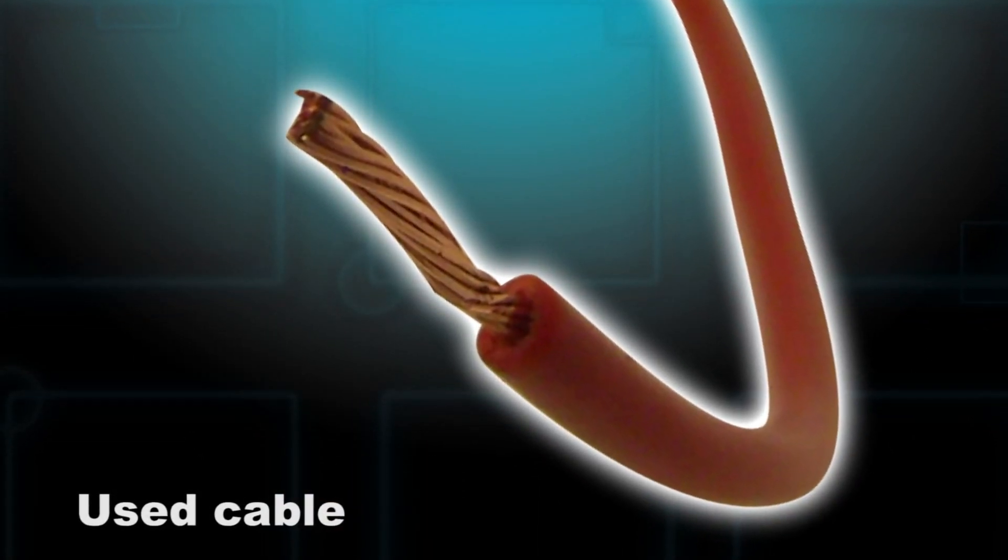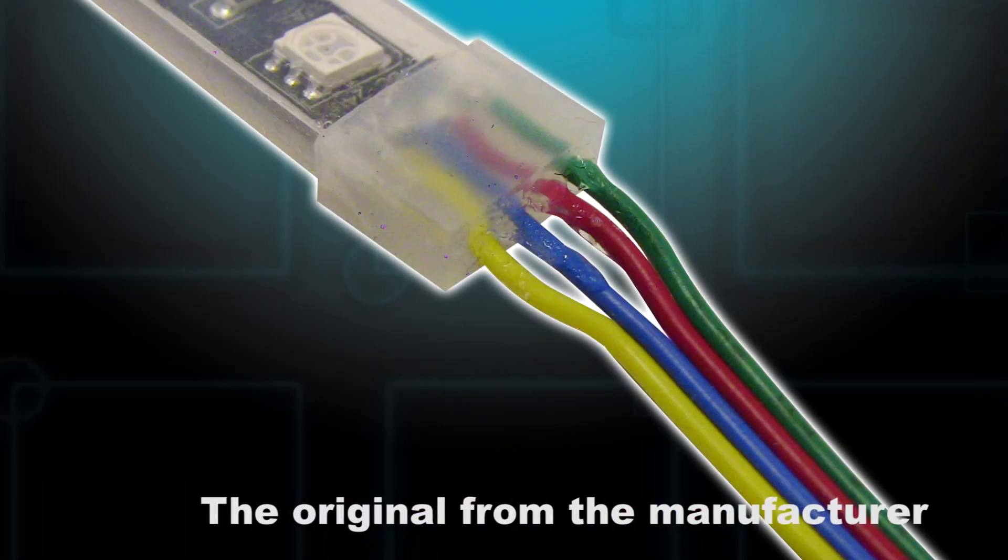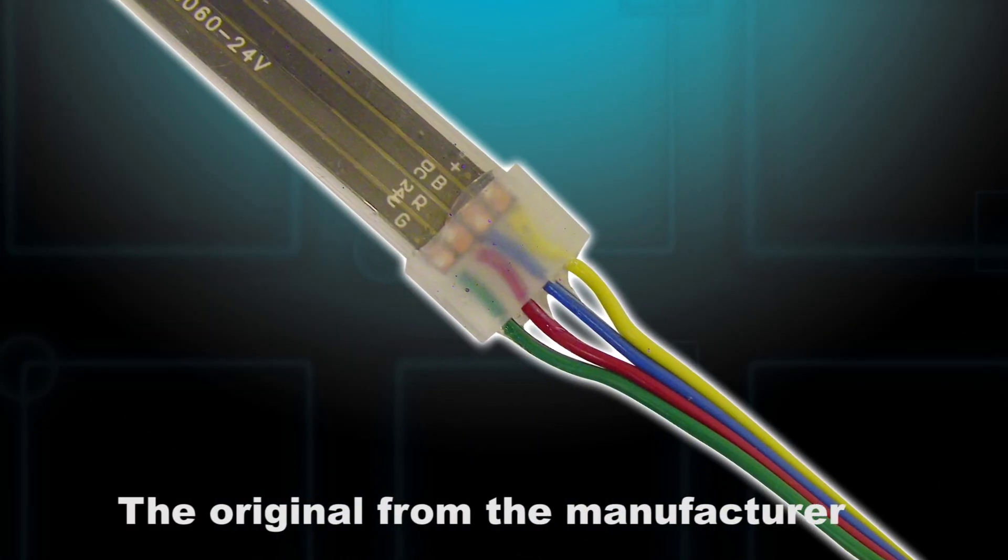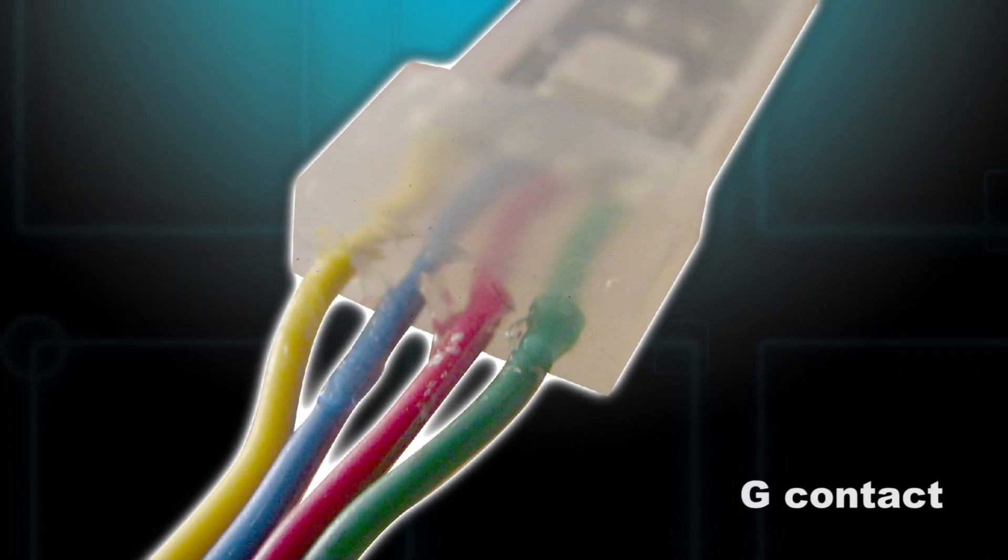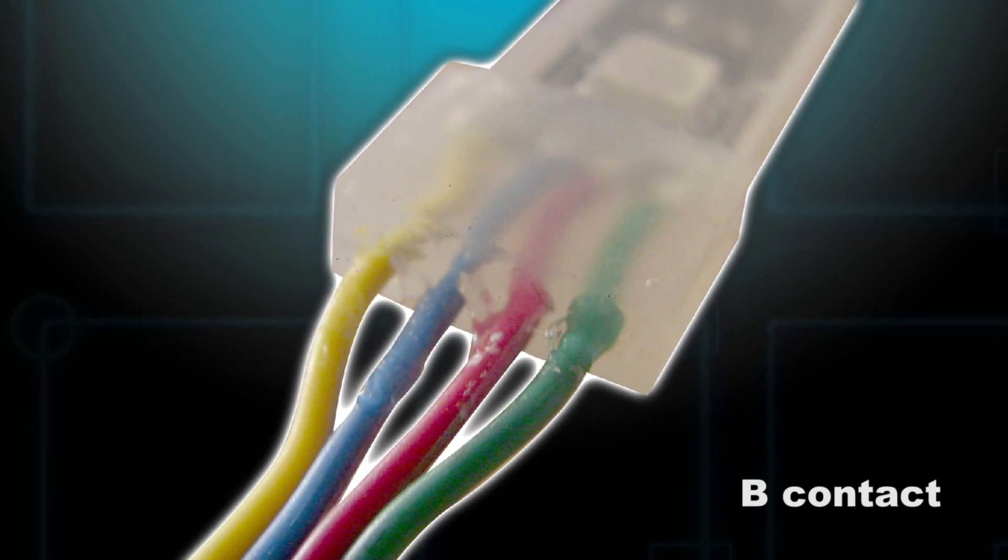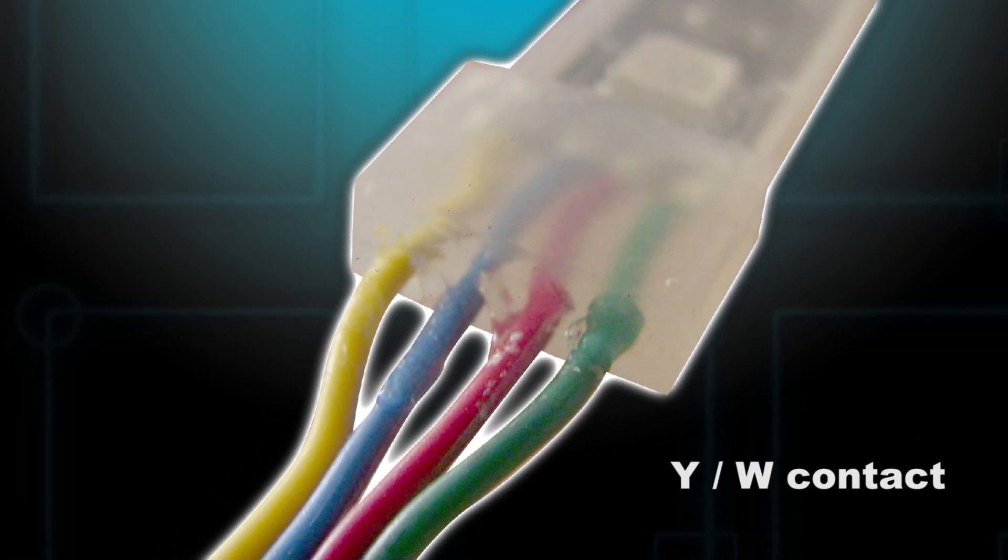The manufacturer usually provides information on the LED strip indicating which color goes to which contact and where the plus is. The most common setup is green cable to G contact, red cable to R contact, blue cable to B contact, and yellow or white cable for plus.